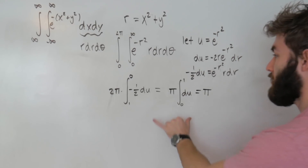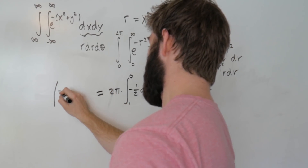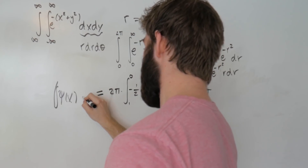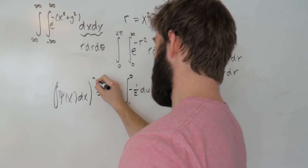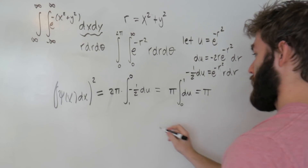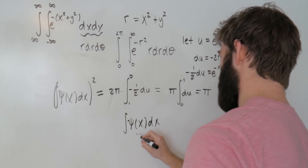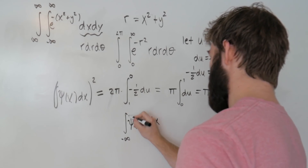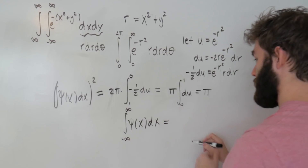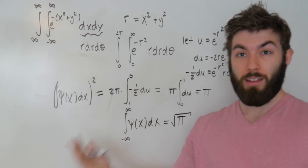Now remember, this whole result — π — corresponds to the integral of ψ(x) dx from negative infinity to infinity, squared. That means the integral of e to the minus x squared from negative infinity to infinity is equal to the square root of π. The Gaussian integral equals √π.